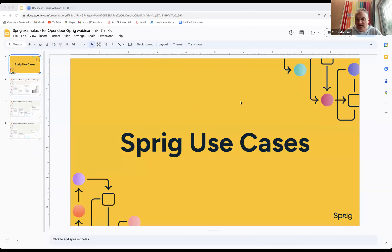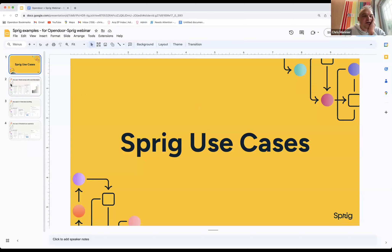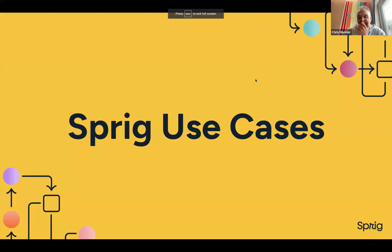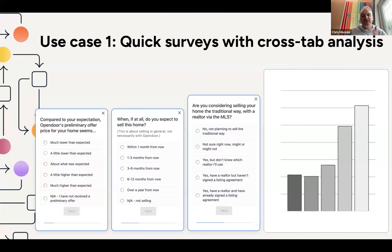Chris Monnier pulls up a screen share with a presentation deck on Sprig use cases. There are three ways he's been using Sprig for research. The first two are fairly well known, and the third is more novel. The first use case is quick surveys with crosstab analysis — you can get really far with this. This is what originally attracted him to Sprig about a year ago: the idea of having lots of people constantly coming to the website with lots of unanswered team questions.